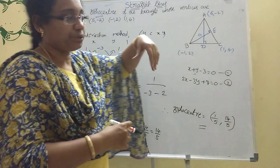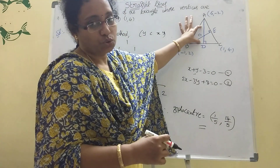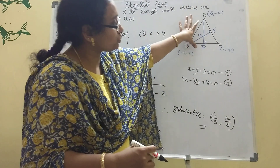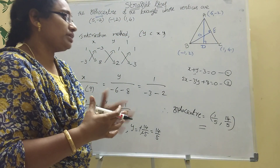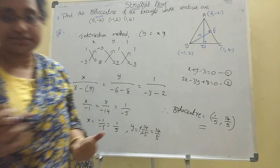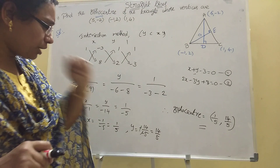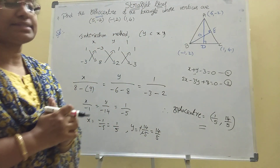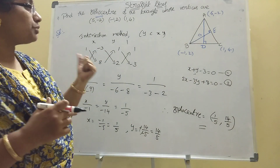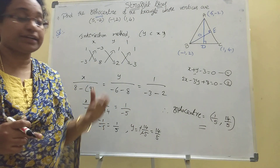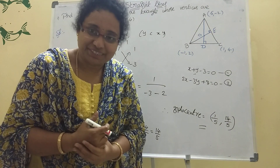To summarize: find the slope first, then the perpendicular slope, then the point. Find the equation of AD and equation of BE, then solve the two equations to get x and y. That point is the orthocenter. The orthocenter here is (1/5, 14/5). This is a very important topic. Watch my videos daily and don't forget to subscribe and share my channel.